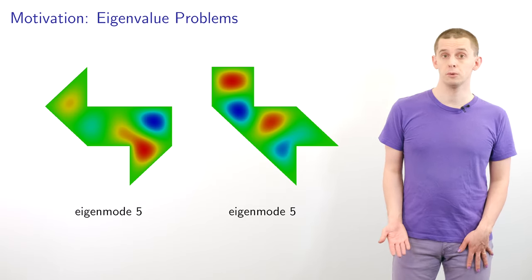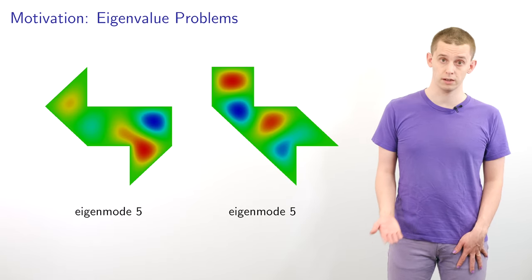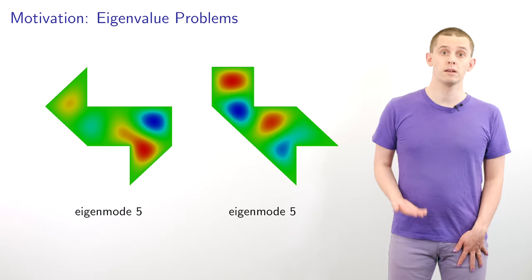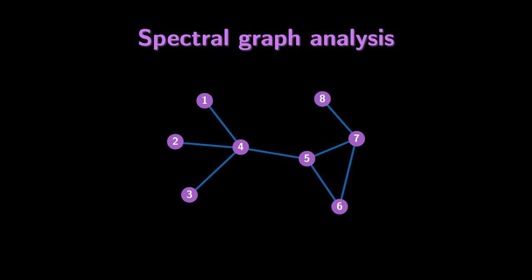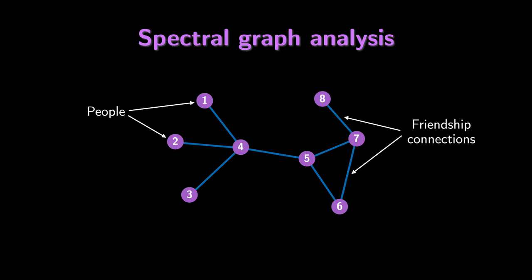We'll now finish this video by looking at a different example where eigenvalues and eigenvectors can be used — specifically to analyze properties of graph networks. Let's look at analyzing the properties of social networks. Here I'm showing a small graph with eight nodes. I'm thinking of the nodes as representing different people, and the edges represent different friendship connections between the people. These could be self-reported, or if we wanted to do this on a larger scale, we could gather this data from online sources, for example Facebook friends or Twitter connections.